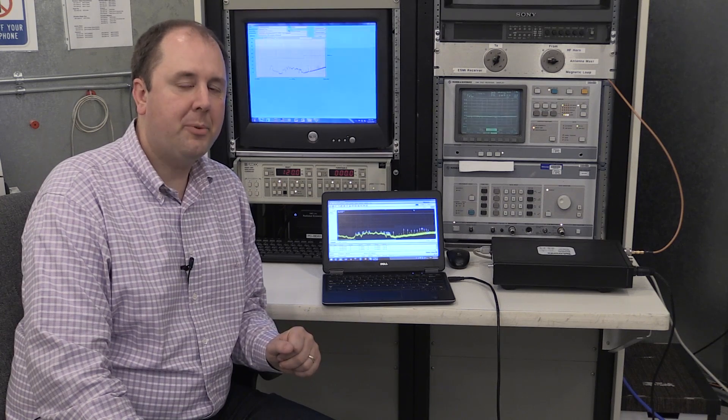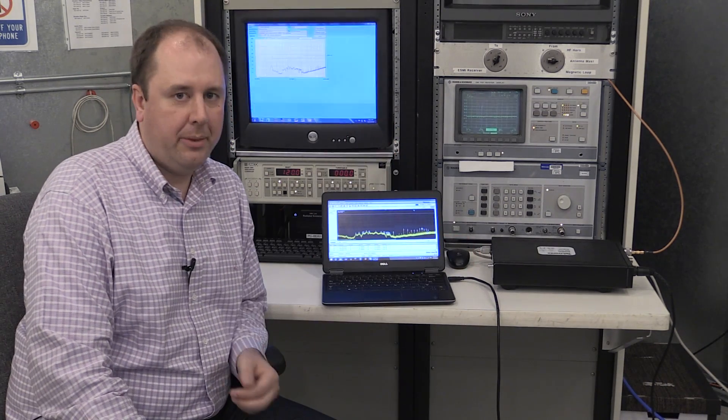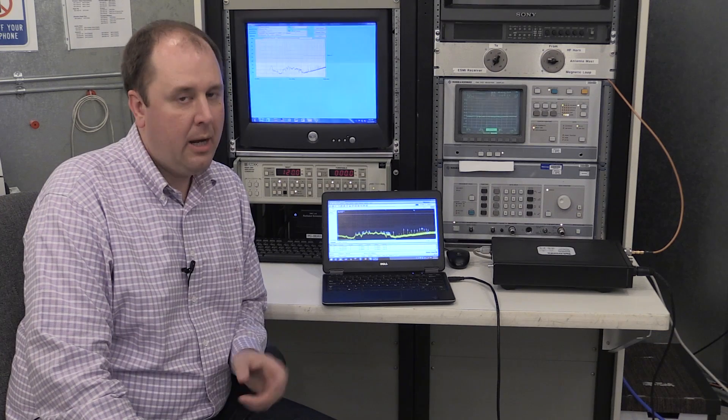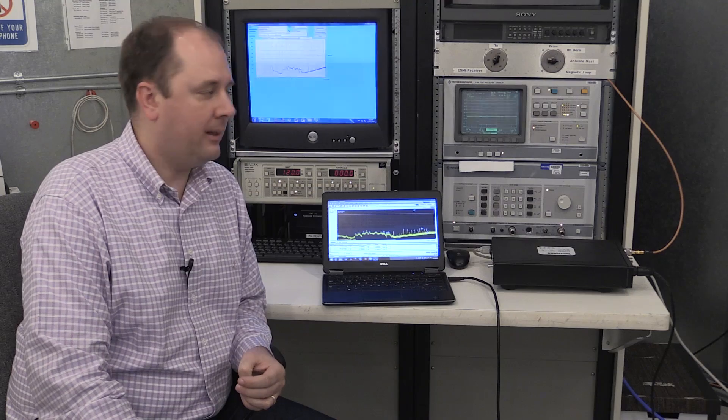So now we're going to look at the results using the RSA 600 compared with the EMI compliance receiver for the radiated emissions test against the CISPR 11 limit lines.